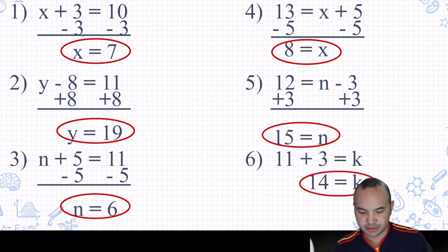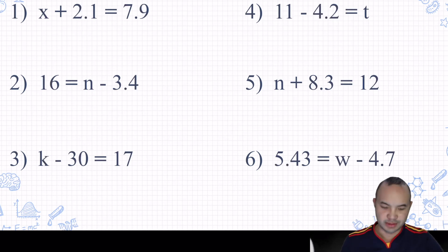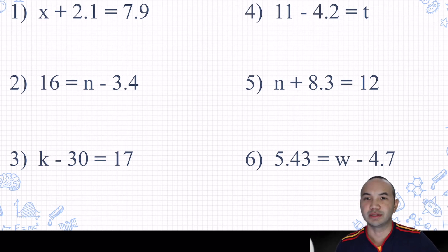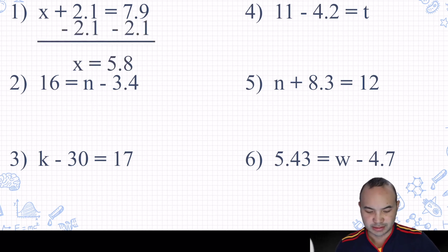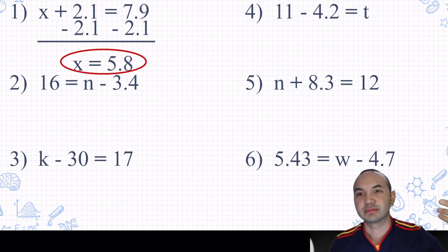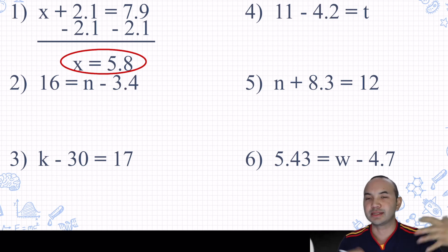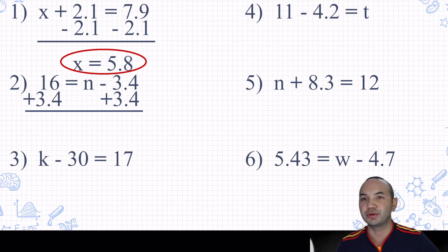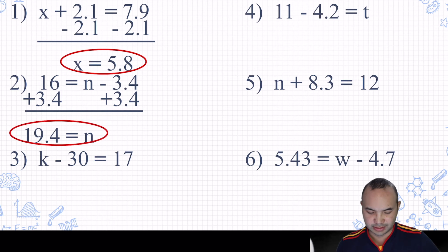Let's try some with decimals — you do the same thing. X plus 2.1 equals 7.9: subtract 2.1, so X equals 5.8. Check: 5.8 plus 2.1 equals 7.9 — correct. Number 2: subtracting 3.4, so the opposite is adding 3.4. Add 3.4 to 16, you get 19.4. K minus 30 equals 17: opposite of minus 30 is adding 30, so K equals 47.